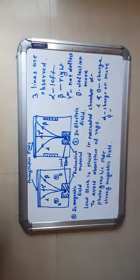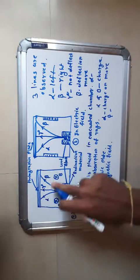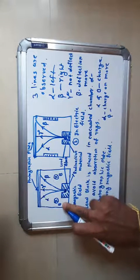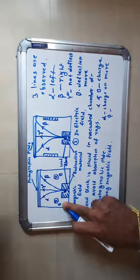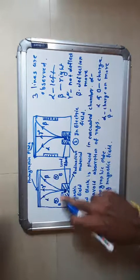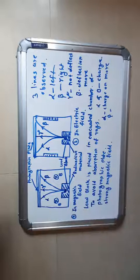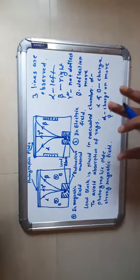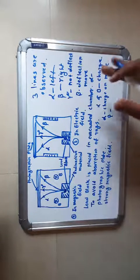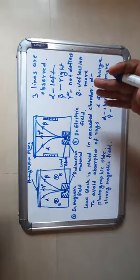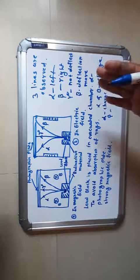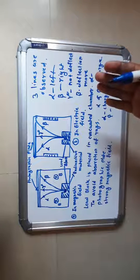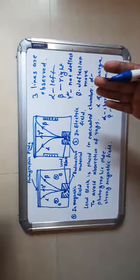If an electric field is applied — represented as B in the diagram — the electric field is applied by two parallel plates as shown in the figure.